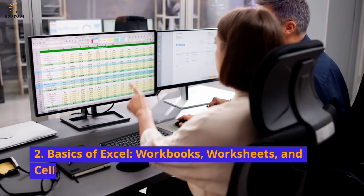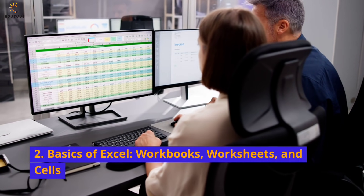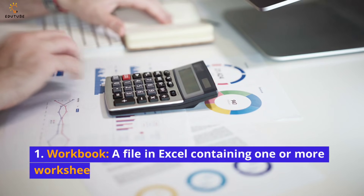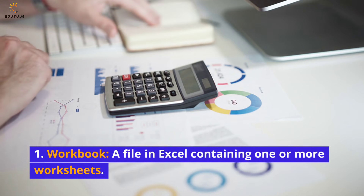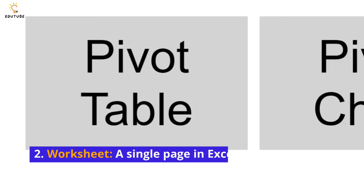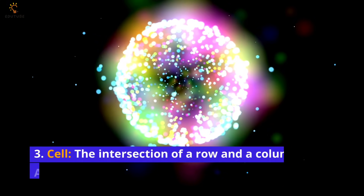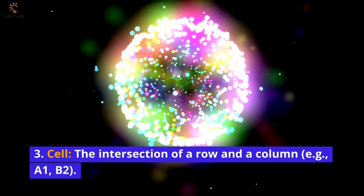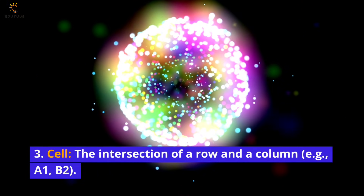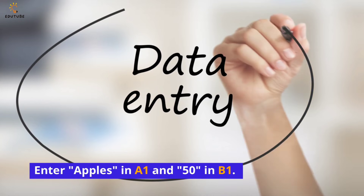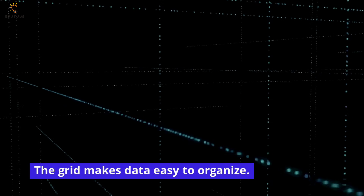Basics of Excel — workbooks, worksheets, and cells. A workbook is a file in Excel containing one or more worksheets. A worksheet is a single page in Excel made up of rows and columns. A cell is the intersection of a row and a column — for example, A1 or B2. You can enter 'apples' in A1 and 50 in B1; the grid makes data easy to organize.